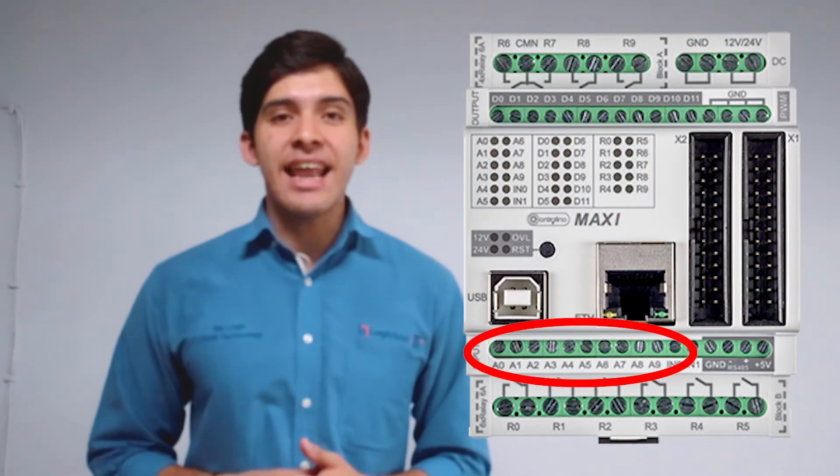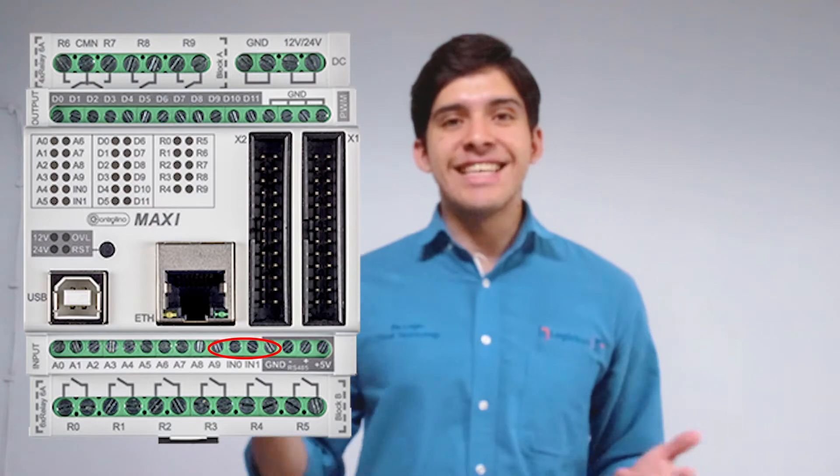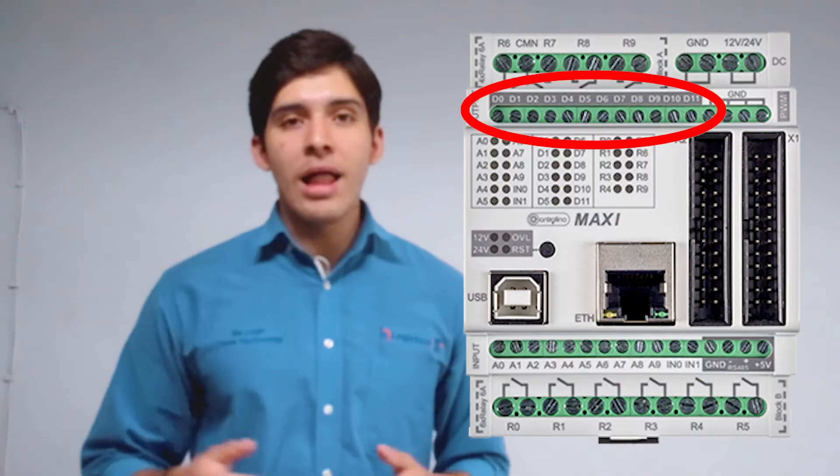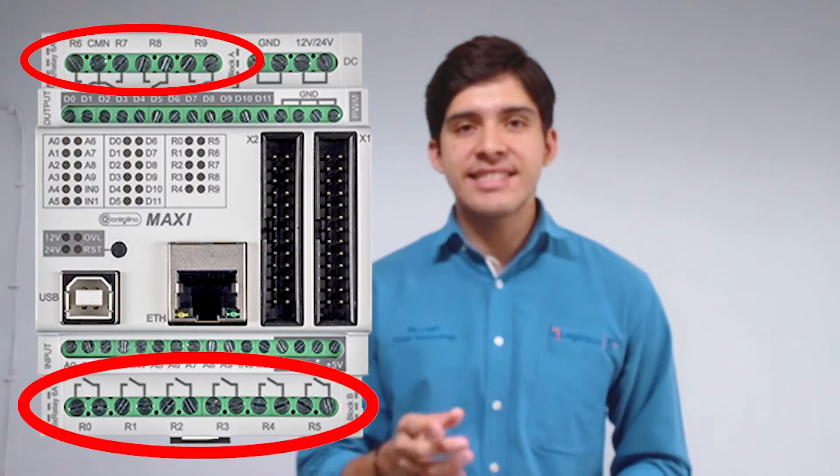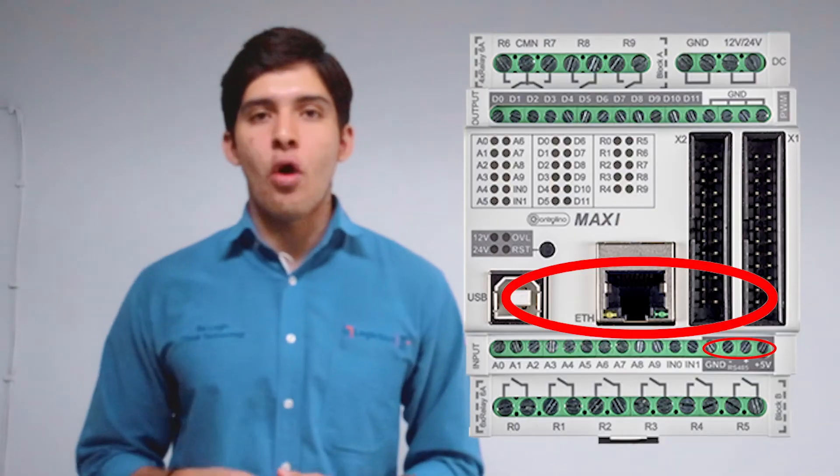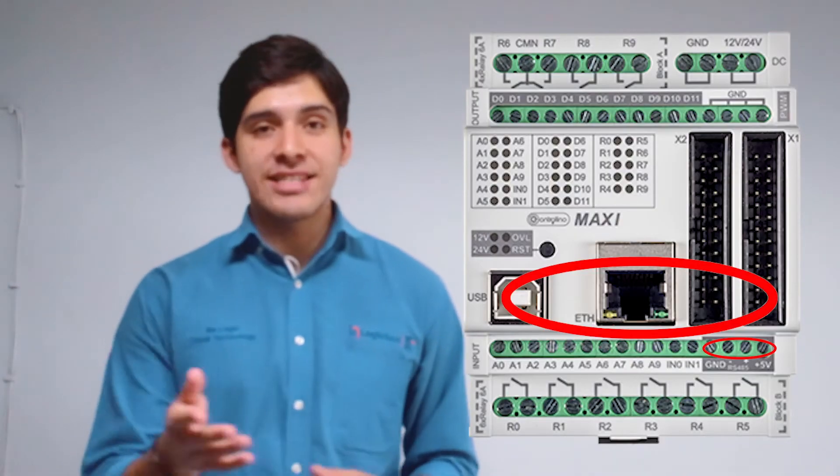The Controlino Maxi has 10 analog digital inputs, 2 digital only inputs, as well as 12 digital outputs. Likewise, the Controlino Maxi has 10 relay outputs, RS-485 port and Ethernet port.